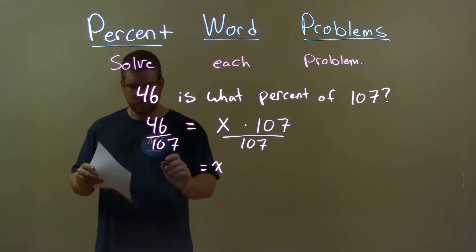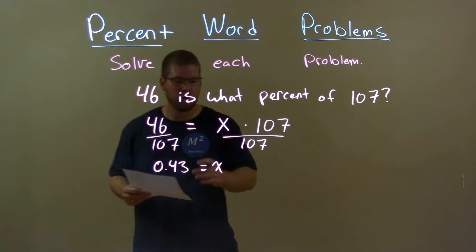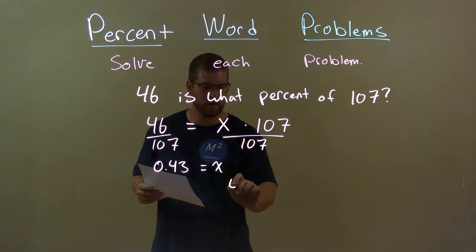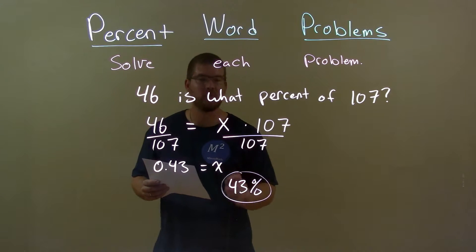That's going to equal a decimal here. 46 divided by 107 is 0.43. Now we can convert that to a percent which is 43 percent, and there we have our final answer.